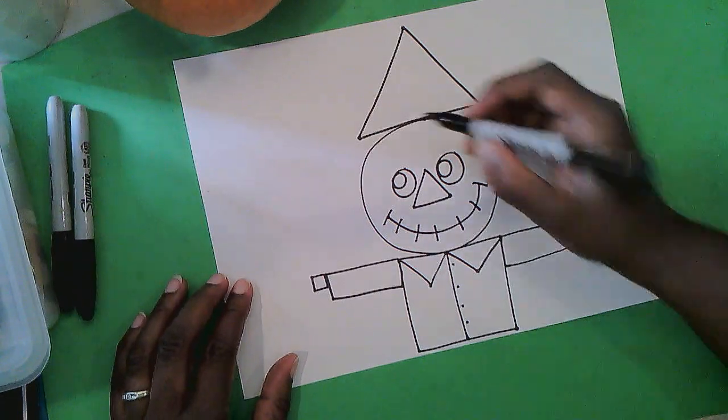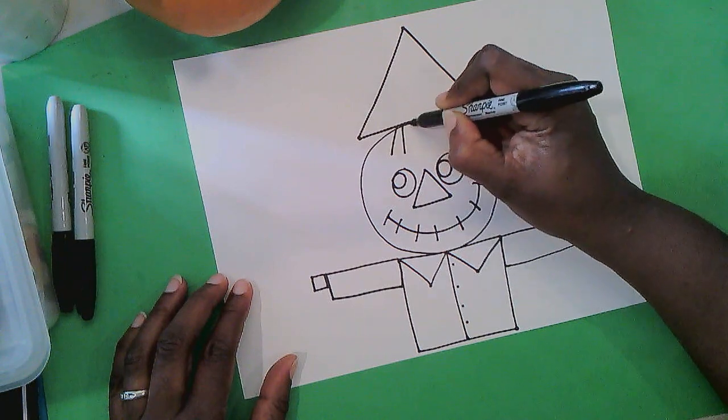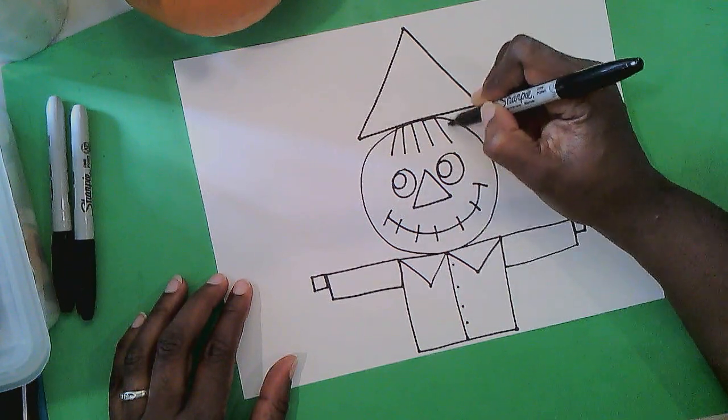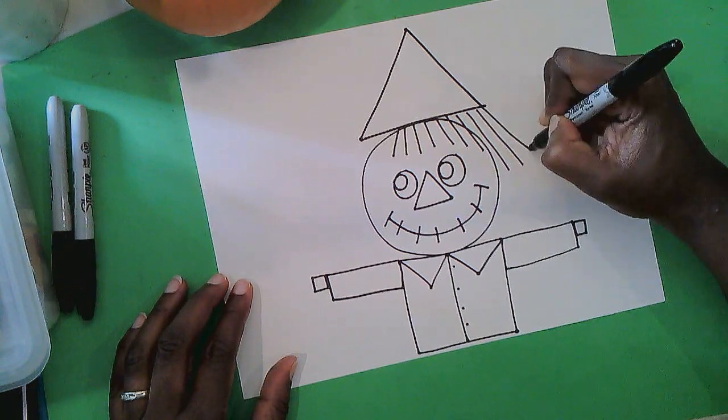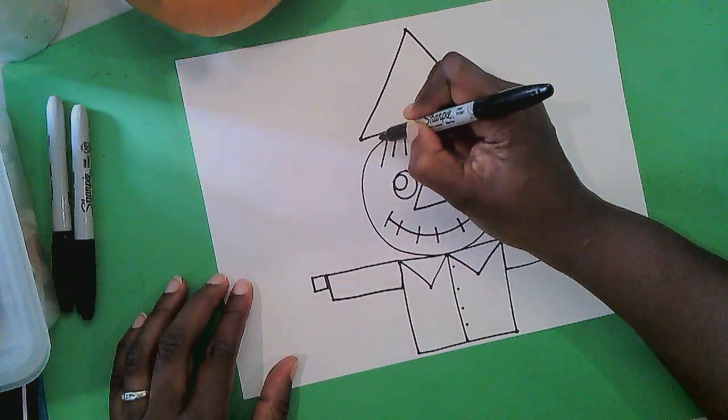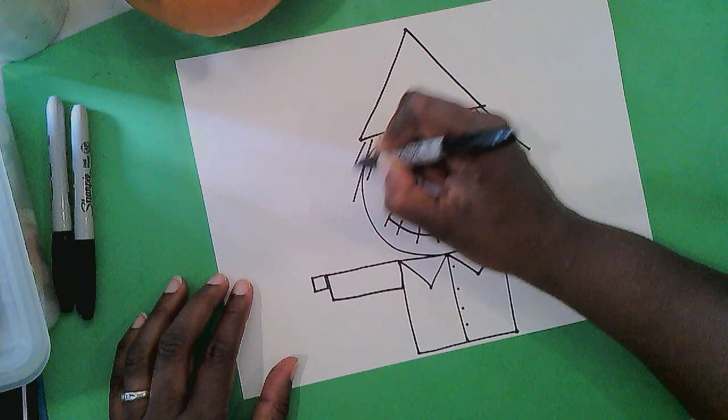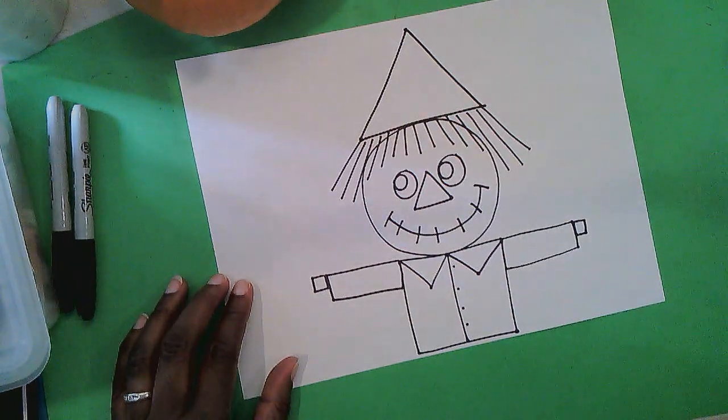Now add some hair. Straight lines. Little short straight lines for the hair. Make the hair come down from under the hat. All the way down from under the hat. Straw for the hair.